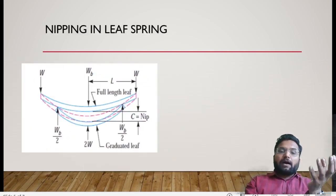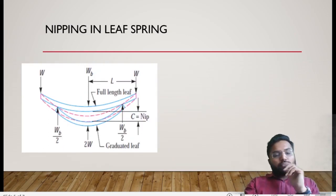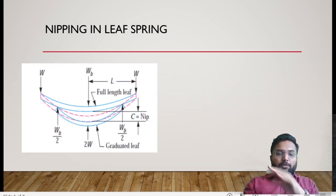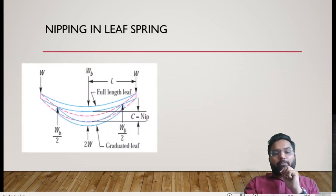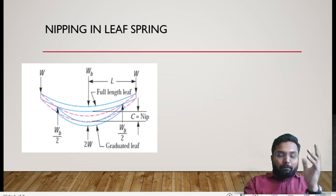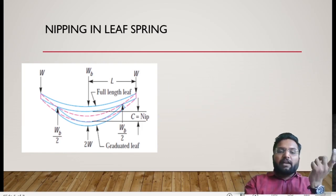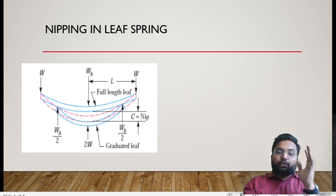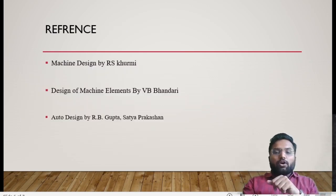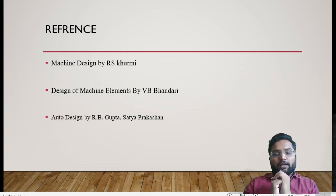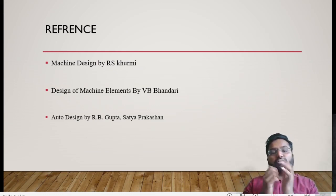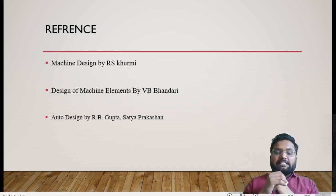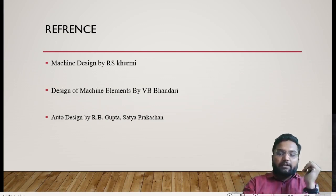These two points — nipping and equal stress distribution — will carry seven marks in the GTU examination, so from a GTU point of view, this is one of the most important theories. If you have any doubt regarding this leaf spring, you can directly contact or message me. In the next video, we will cover the derivation and design of this leaf spring. For this session, I have taken reference from Machine Design by R.S. Khurmi. You can also refer to Design of Machine Elements by V.B. Bhandari and Auto Design by R.B. Thank you.